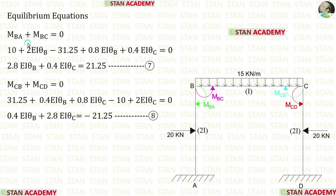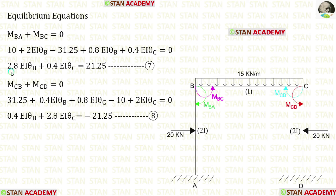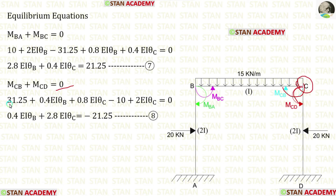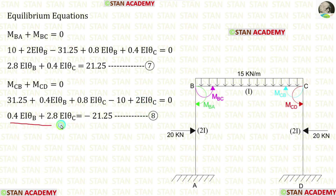Now let us write the equilibrium equations. The first equation is at joint B, where MBA plus MBC equals zero. Substituting the slope deflection equations for MBA and MBC, we derive equilibrium equation number 7. The second equilibrium equation is at joint C, where MCD plus MCB equals zero. Substituting the slope deflection equations for MCB and MCD, we derive equilibrium equation number 8.